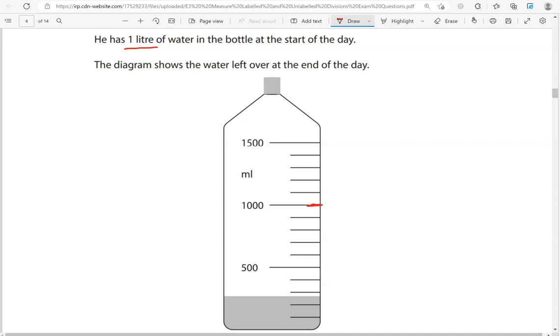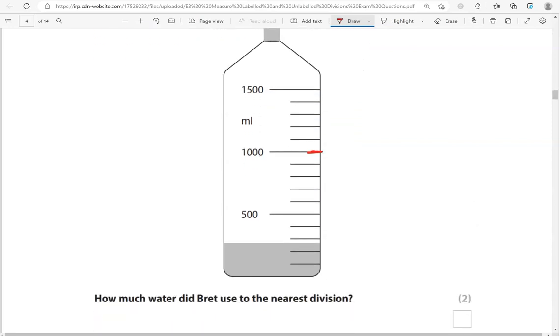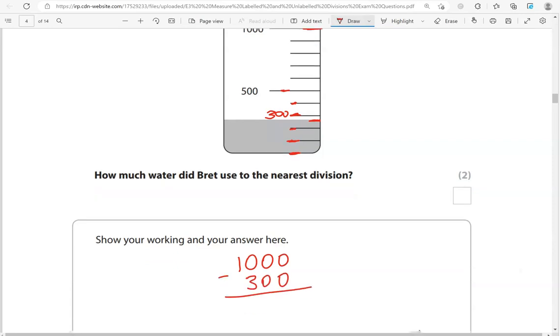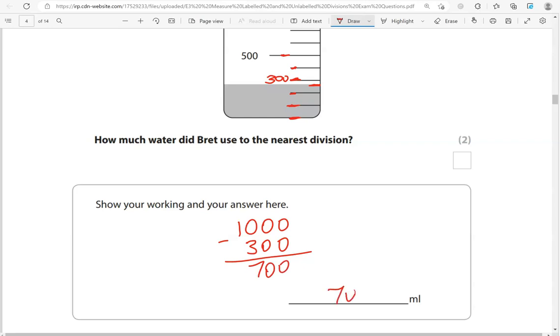Because in a liter, there are 1,000 milliliters. It's gone down to this point here now, which is very close to this division. So what is that point? This would be 0, so this is 500. If we go up in 100: 100, 200, 300, 400, 500, that works. So this point here is 300 milliliters. So it's gone from 1,000 to 300. If we take away 300 from 1,000, we get 700. So he has drank 700 milliliters of water.